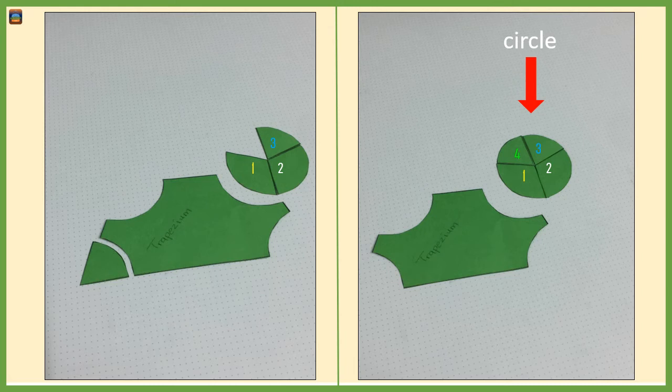A circle has 360 degrees. The four angles of the trapezium make a full circle. This shows that the angles in a trapezium sum up to 360 degrees.